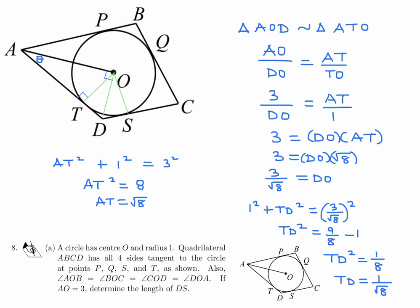We want DS, not TD. But if you have a point D that touches the circle at two tangent points T and S, then those two segments are equal — TD equals DS. We just found TD equals 1 over root 8. Rationalizing the denominator by multiplying top and bottom by root 8 gives root 8 over 8, which simplifies to 2 root 2 over 8, or root 2 over 4. That is the answer: DS equals root 2 over 4.